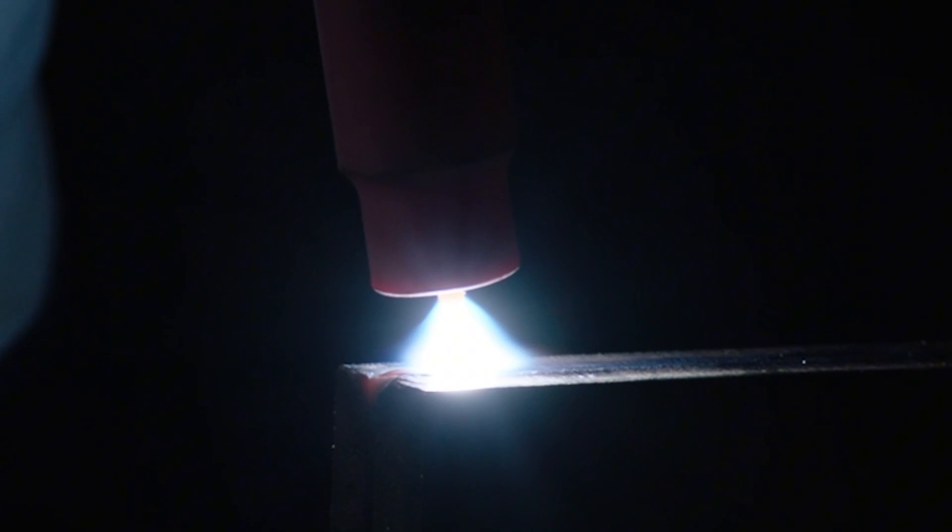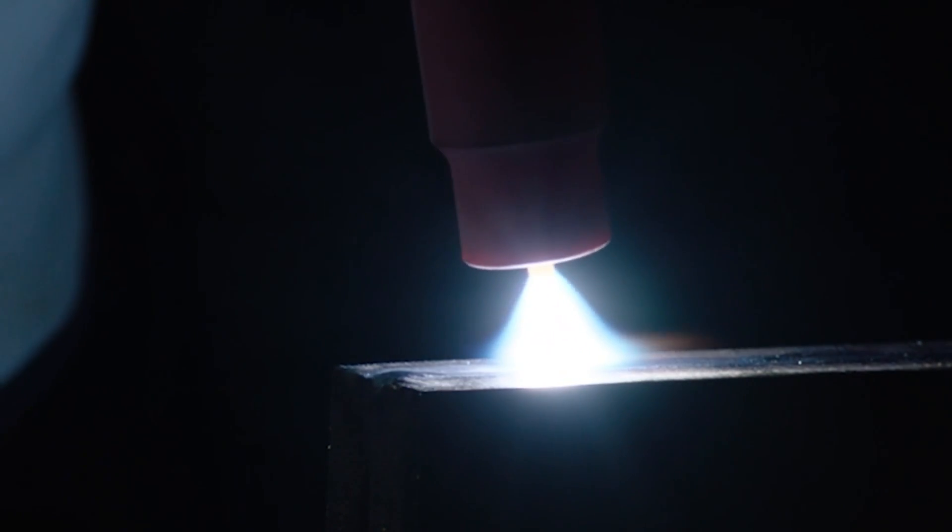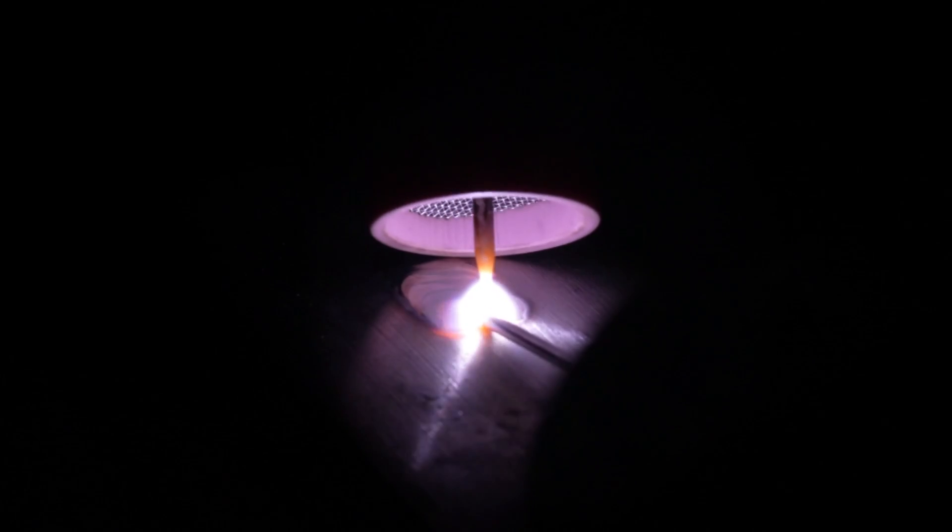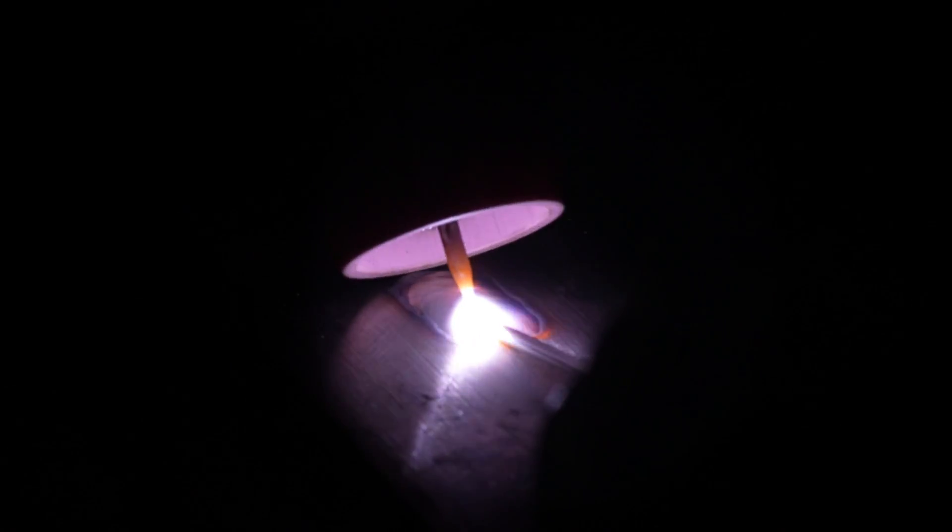Keep the arc length short, about 2mm to concentrate the heat input. Maintain a slight push angle of about 10-15 degrees to ensure proper gas coverage and reduce oxidation.